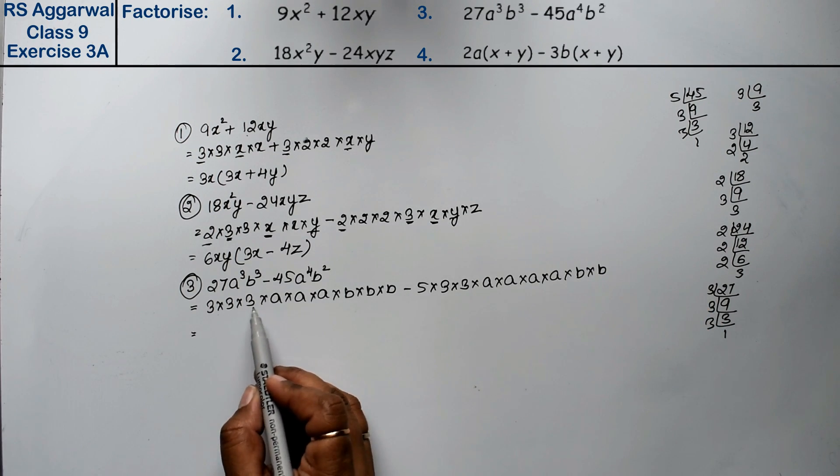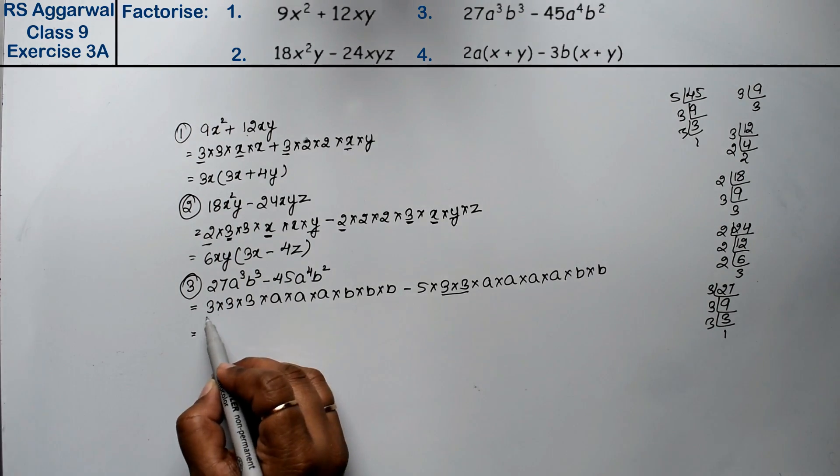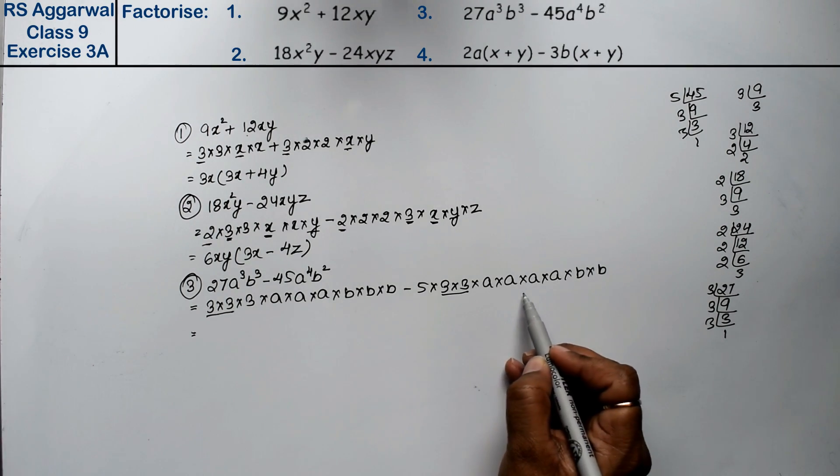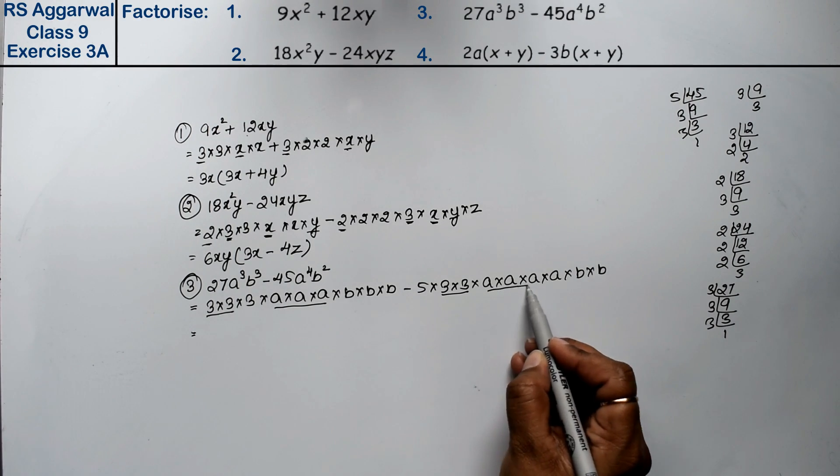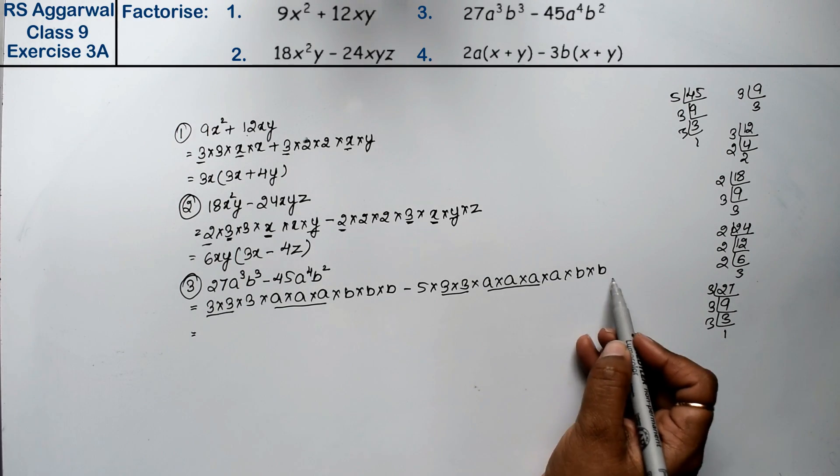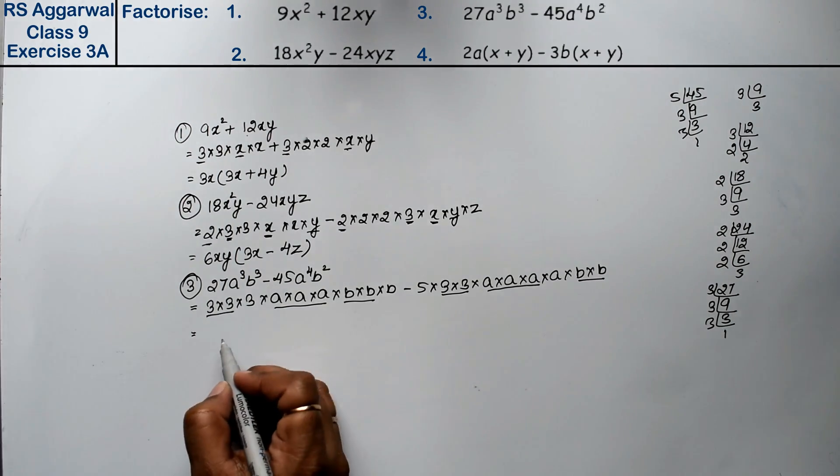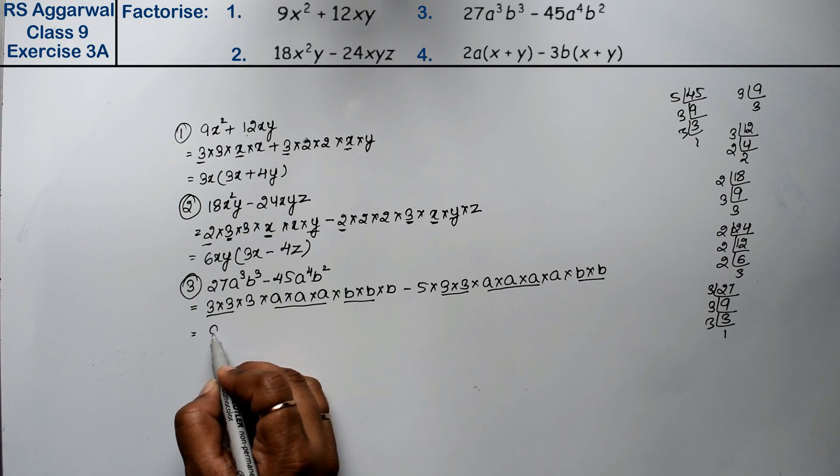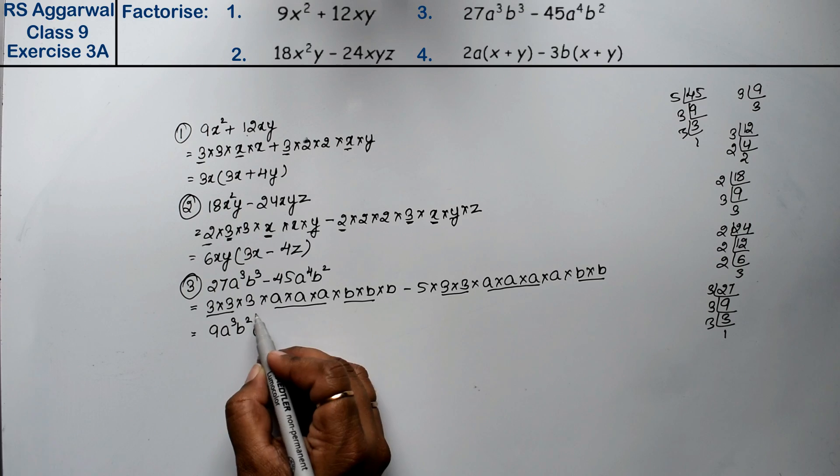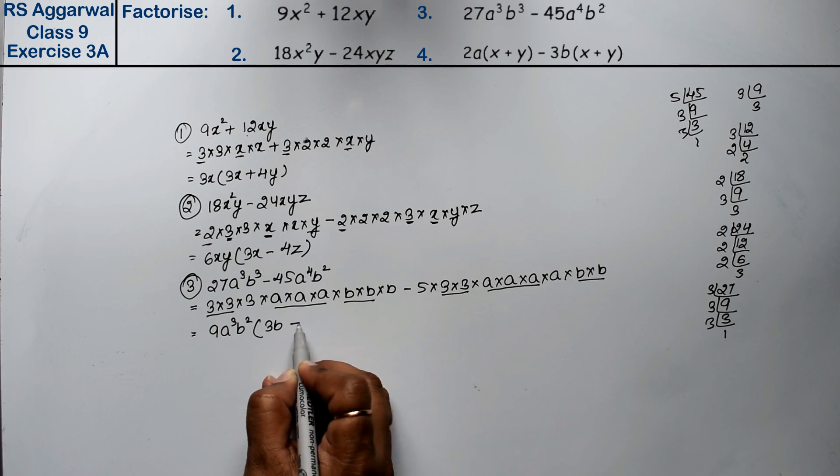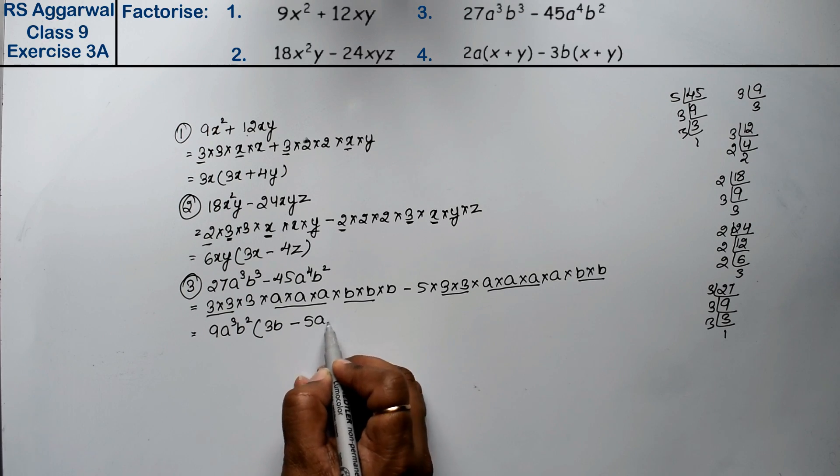Now you can see here is 3 times 3 and here is 2 times, so there is 2 common. Right? Here is a power 4 and here is a power 3, so there is 3 only common. And here is b² and here is 3, so there is 2 only common. So what is common? 3 × 3 = 9, a³b². What is inside? This is 3 and 1b, so 3b minus. What is inside? 5a is the answer.